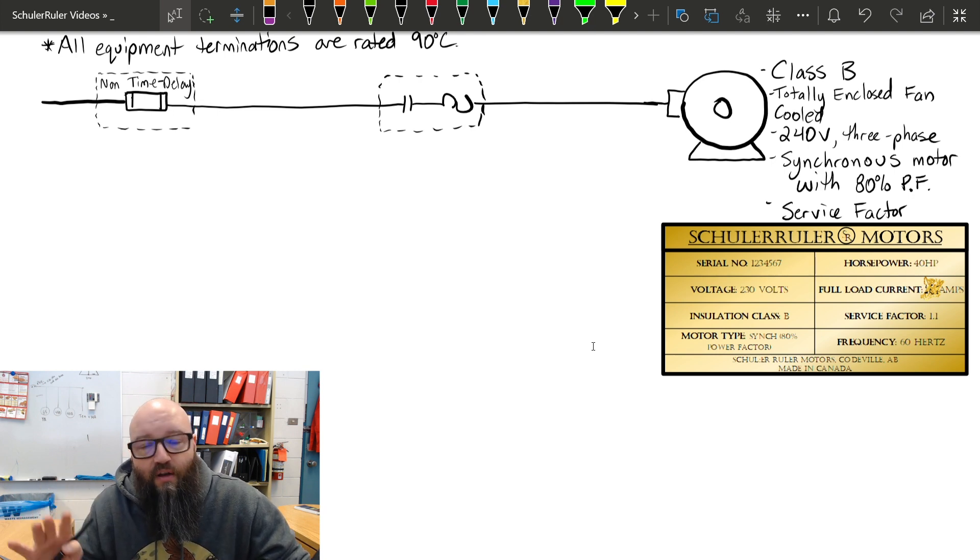At table 44, we have our normal squirrel cage induction motors on the left-hand side, but over on the far right-hand side there's a few columns specifically for synchronous motors. If you look up at the top, it says synchronous motors at a unity power factor.